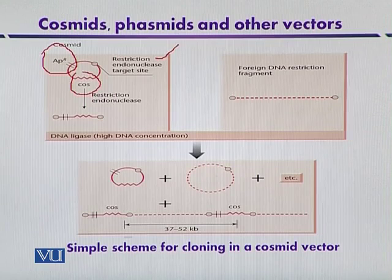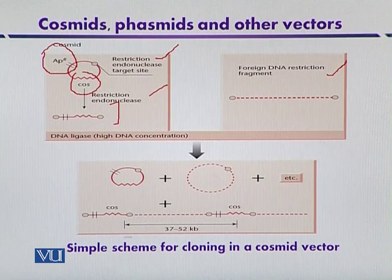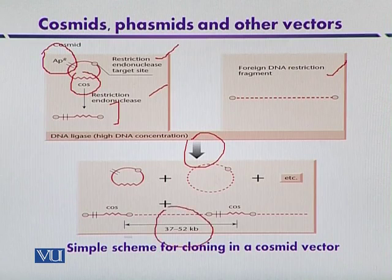This diagram shows a simple cloning scheme using a cosmid vector. The cosmid can be digested with a restriction enzyme so it assumes the linear form. The foreign DNA is also digested with an appropriate restriction enzyme. They are then mixed together in the presence of DNA ligase so that at high DNA concentration they can join together. Between the cos sites of the cosmid, comparatively larger fragments of DNA — up to 37 to 52 kilobases — can be inserted into the cosmid vector.